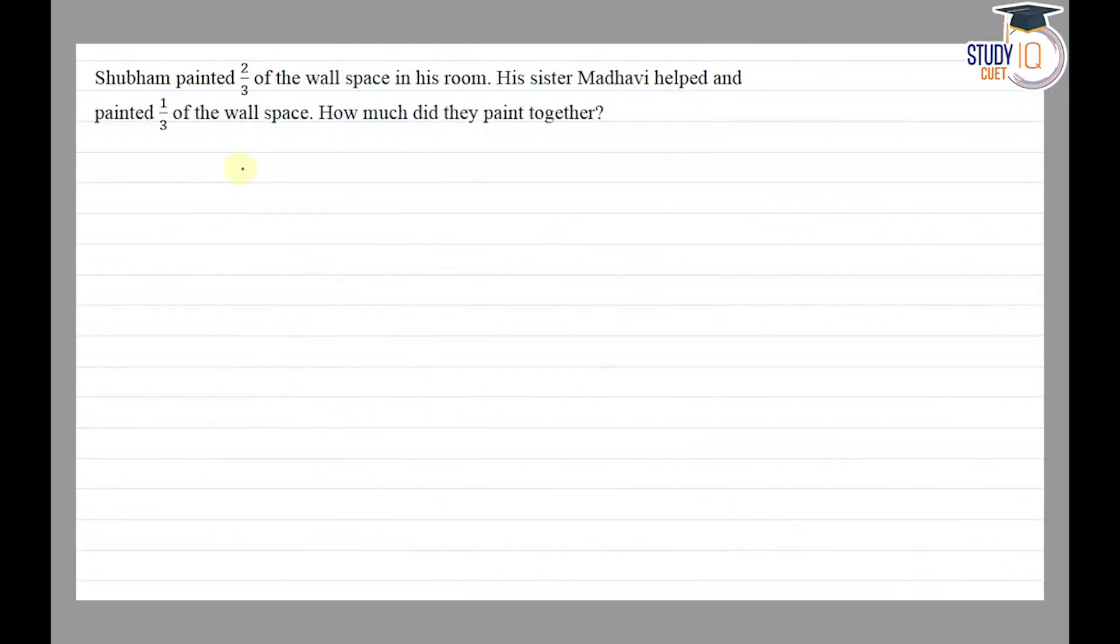Hello everyone. This question appears in Class 6 NCERT chapter on fractions, exercise 7.5, question 3. The question says that Shuvam painted 2/3 of the wall space in his room. His sister Madhvi helped and painted 1/3 of the wall space. How much did they paint together?